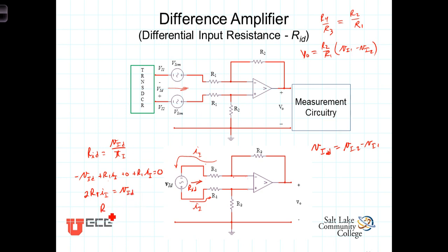Or finally then we can form the ratio of those two and give us the input resistance. It's equal to VID divided by I N, which is just equal to 2 times R1.